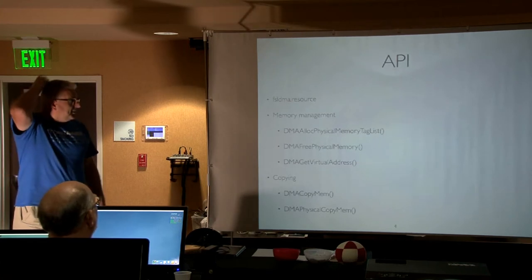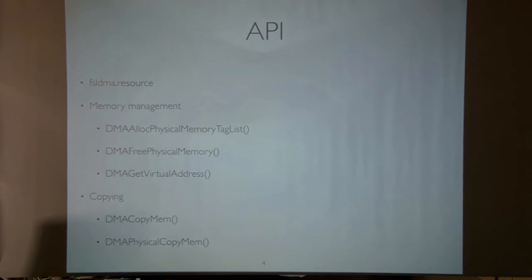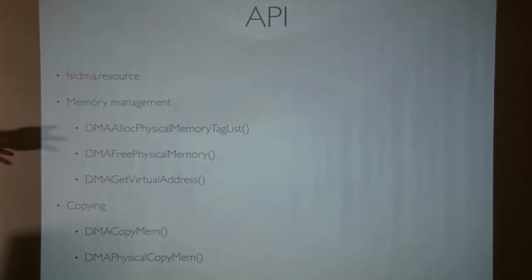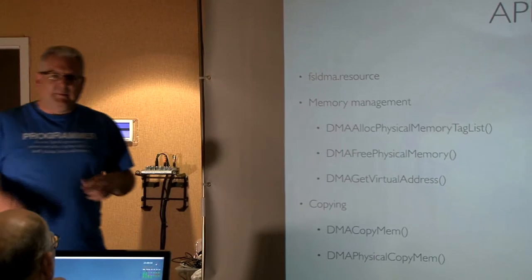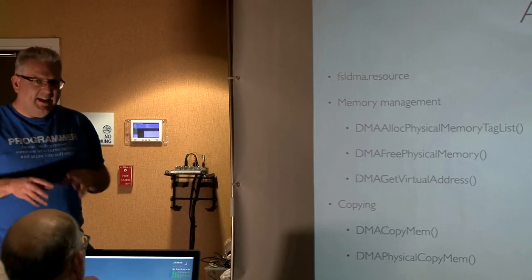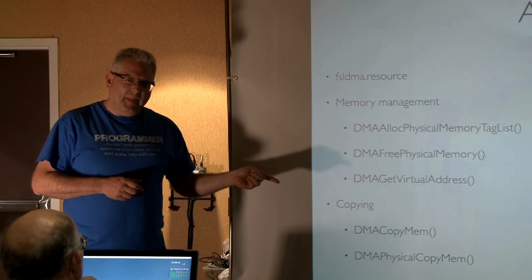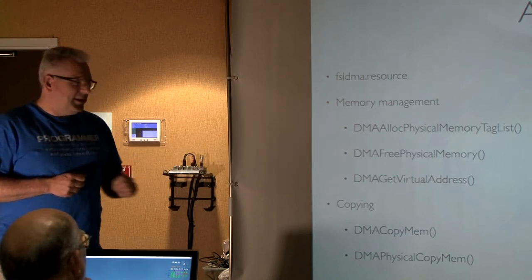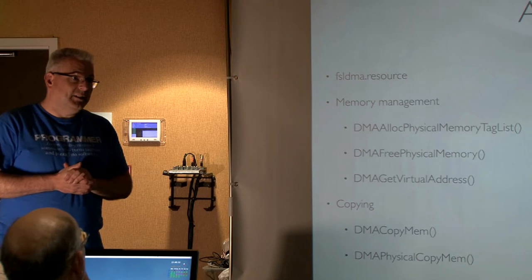So we have developed the FSLDMA resource - now it exists, it's not fake. Here are the functions for memory management: DMA alloc, pre, get. I'm not 100% convinced we're going to keep these three. They're kind of added as convenience functions to wrap AllocVec tags, because a lot of tags can do the same thing. We're playing with the engine, and what we're going to do is give this to the beta testing team and get some feedback.